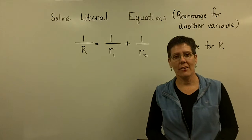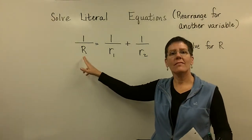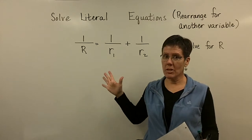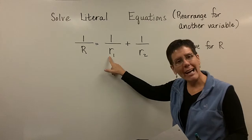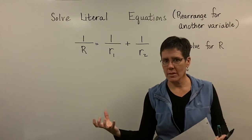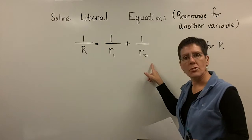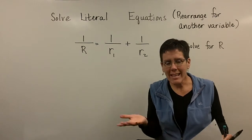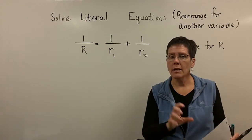In electricity and electronics, we often find ourselves working with this equation. Capital R represents the total resistance of two resistors that are in parallel. I would like to take this expression and solve for capital R. R sub 1 means there's an item — in this case a resistor — and I'm going to call it resistor number 1. It's a subscript. And this is resistor number 2. Because they represent resistance, I use the letter R, but they're not the same, so I call them resistor number 1 and resistor number 2.